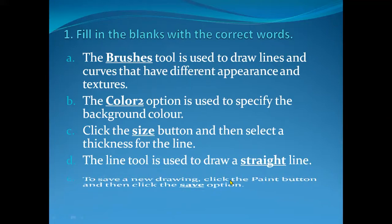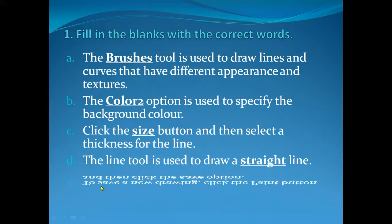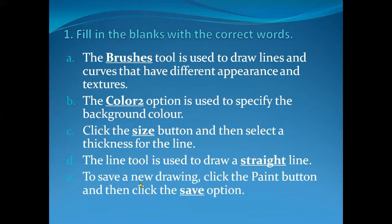Number E: To save a new drawing, click the Paint button and then click the Save option. When you are already working in the Paint program — you are drawing something and you have to open a new drawing — you save a new drawing, then you will click the Save option on your window.